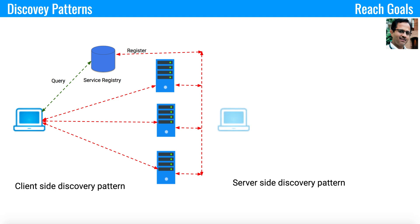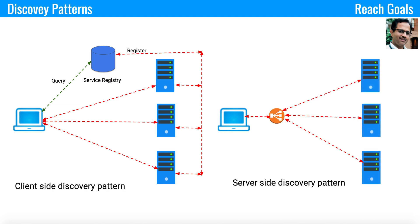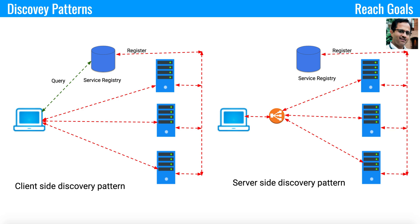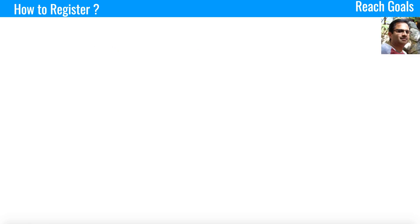In the server-side discovery pattern, the client has a minimal role. The client connects to a load balancer, and the load balancer connects to the different services. The services register themselves into the service registry. Here, the client does not directly query the service registry — the load balancer queries it, gets information about available instances, and then connects to the appropriate services. All the discovery logic and algorithms reside at the load balancer level.